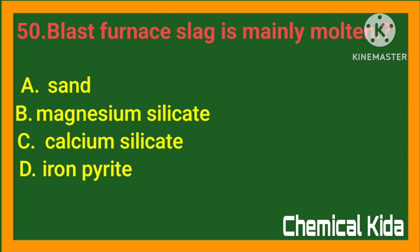Blast furnace slag is mainly molten: a) sand, b) magnesium silicate, c) calcium silicate, d) iron pyrite. Answer: c) calcium silicate.